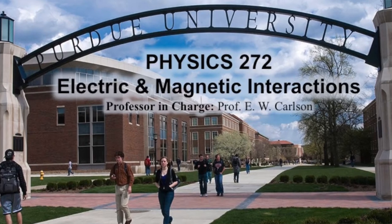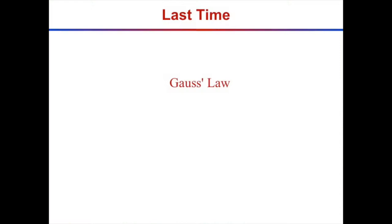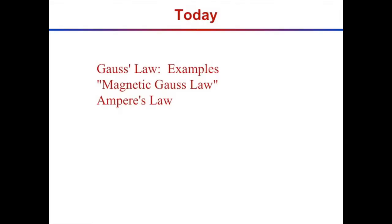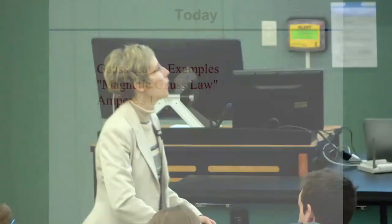Welcome back. We've been discussing Gauss's Law. Last time we started Gauss's Law, today we're going to continue it. I'll show you an example of Gauss's Law, then we'll look at the magnetic analog of Gauss's Law, and also get into Ampere's Law. Ampere's Law is another way to look at the current and magnetic field relationships.